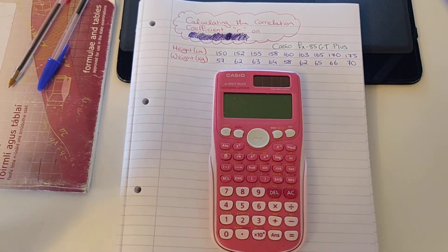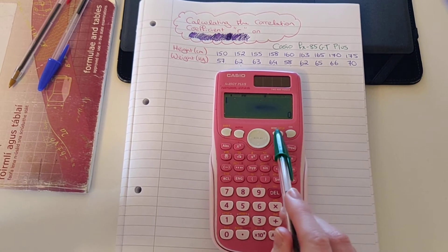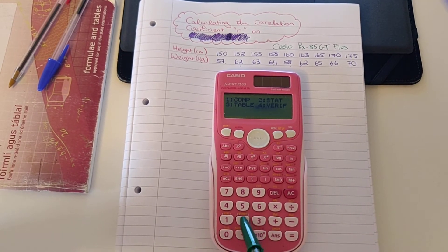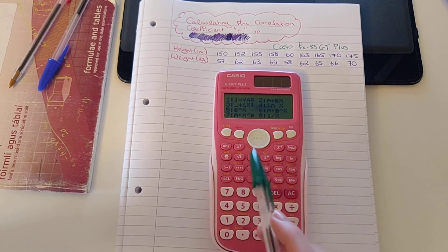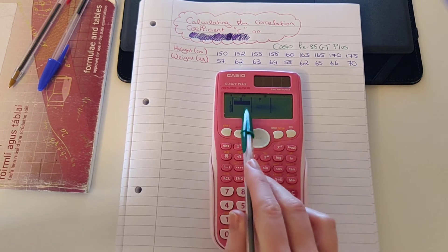So to start off today, what I need to do is start by pressing the on button to turn on the calculator. Then I'm going to press mode and press 2 for statistics. Then I'm going to press 2 for a plus bx, which will give me a table with x and y.